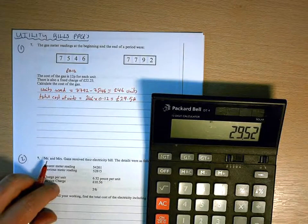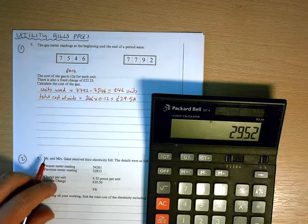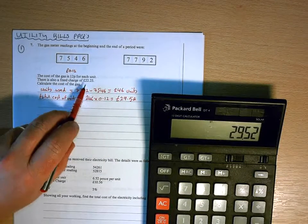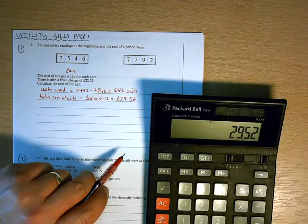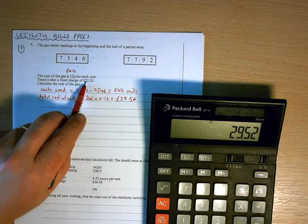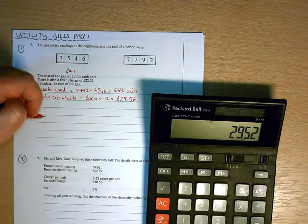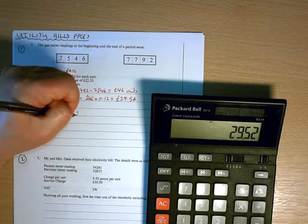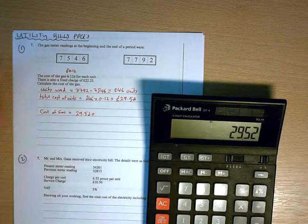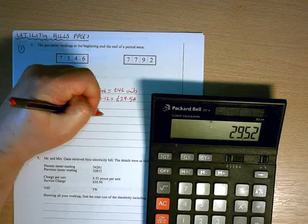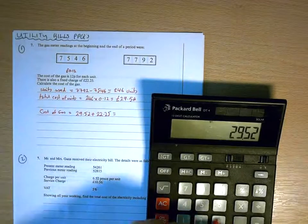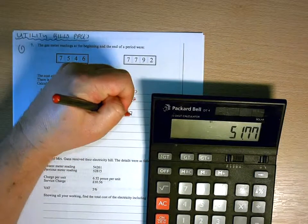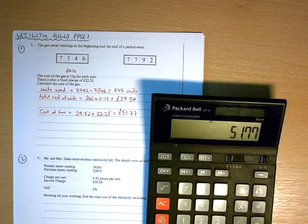In this question, once we've worked out the total cost of the units, we're then going to add on the cost of the charges. The fixed charge in this question is just a flat rate of £22.25. So in order to work out the total cost of the gas, we have to add that on to the cost of the units. So cost of gas will be £29.52 plus the £22.25 fixed charge. So the total bill for this particular question is going to be £51.77.